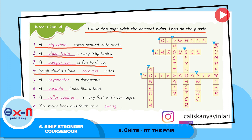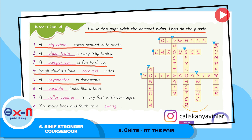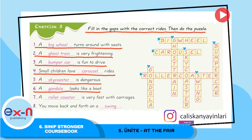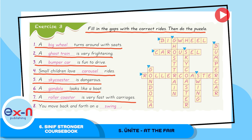Number 5: A skycoaster is dangerous. Number 6: A gondola looks like a boat. Number 7: A rollercoaster is very fast with carriages. Number 8: You move back and forth on a swing.